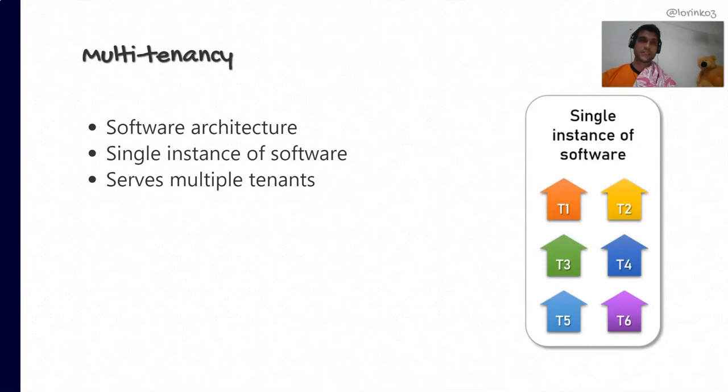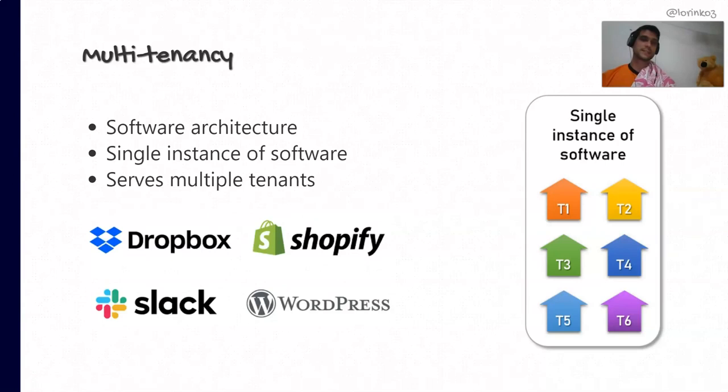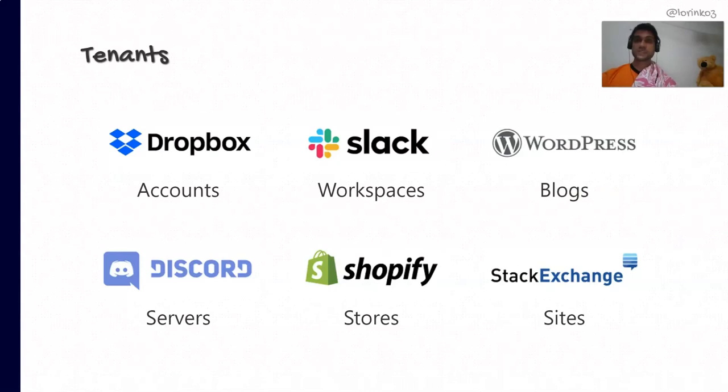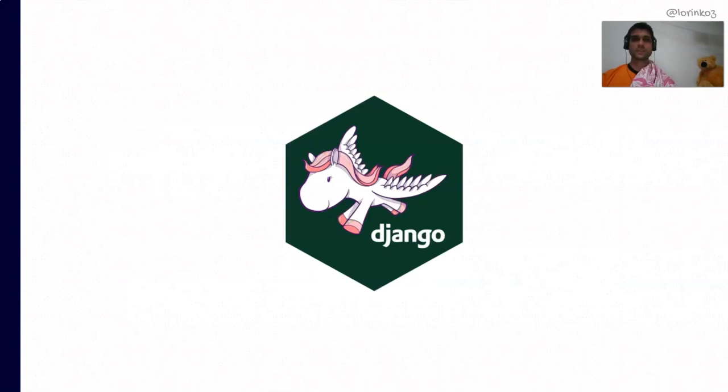To put it in Wikipedia-grade formal terms, multi-tenancy is the software architecture in which a single instance of the software running is capable of serving multiple tenants. As examples, businesses that implement a multi-tenancy model include Dropbox, Slack, WordPress, Discord, Shopify, and Stack Exchange. A tenant is an isolated space in which users with specific privileges interact — so, the accounts of Dropbox, workspaces of Slack, blogs of WordPress, servers at Discord, stores at Shopify, and sites at Stack Exchange.